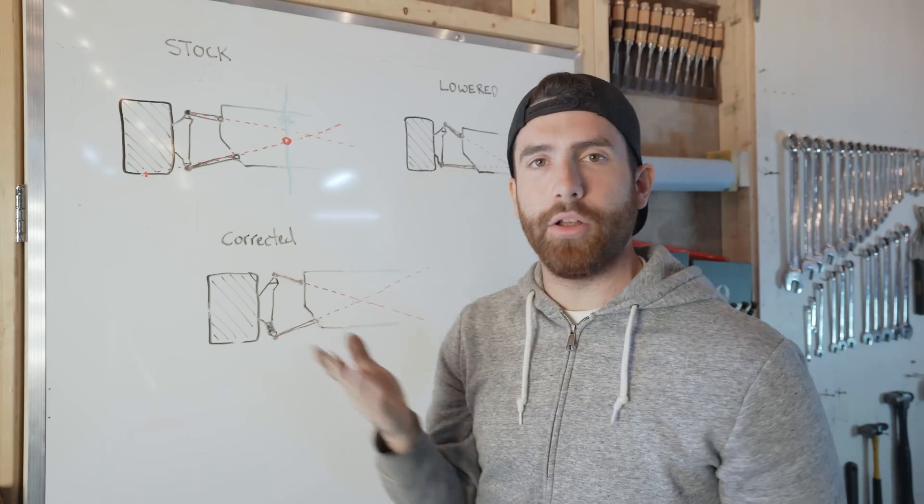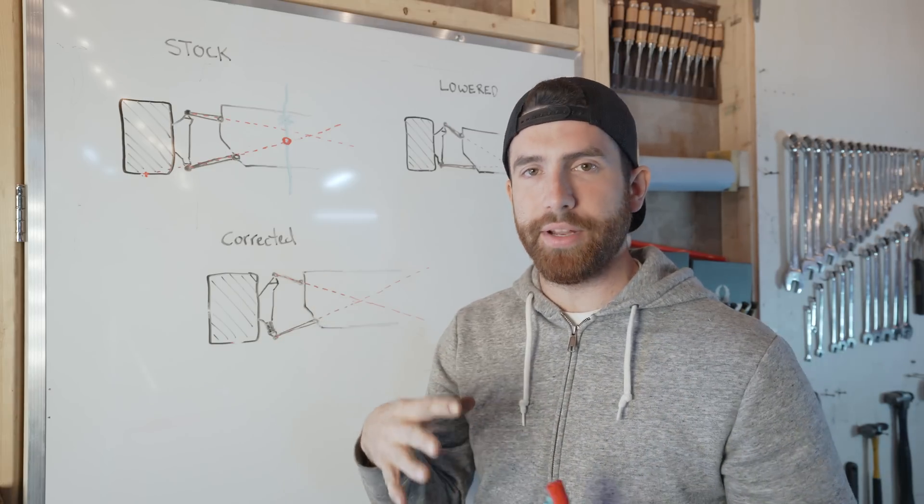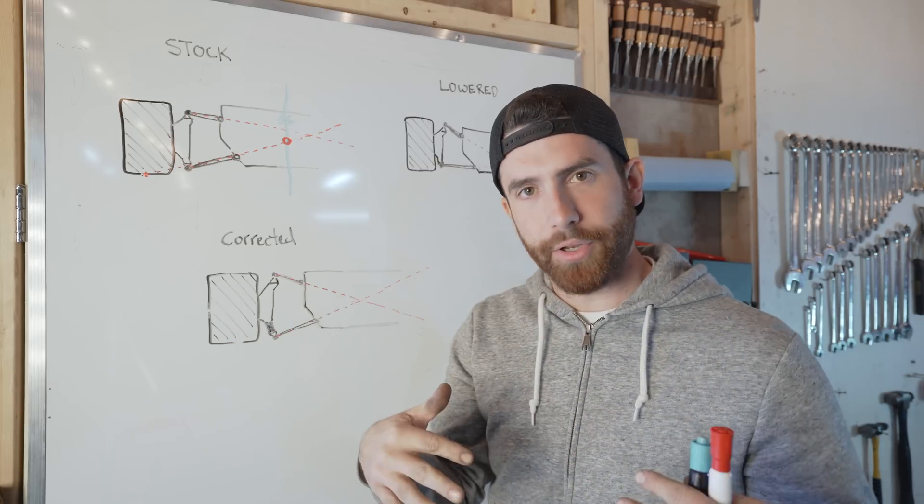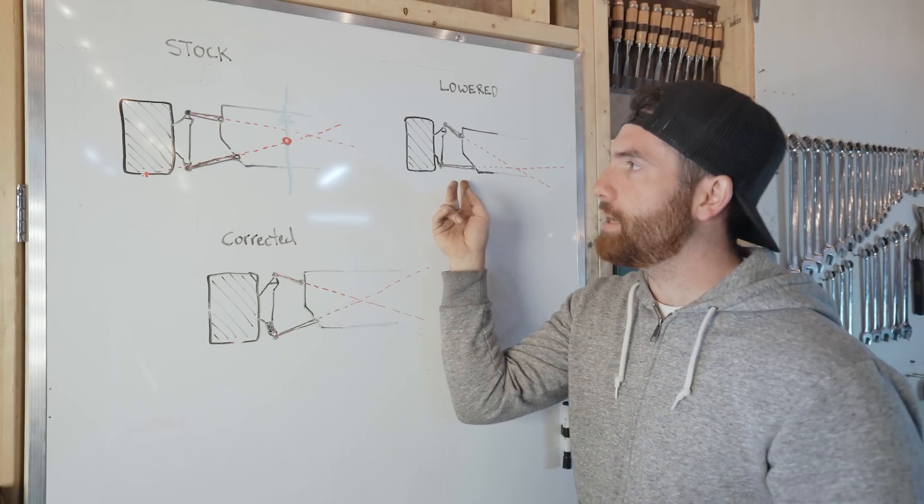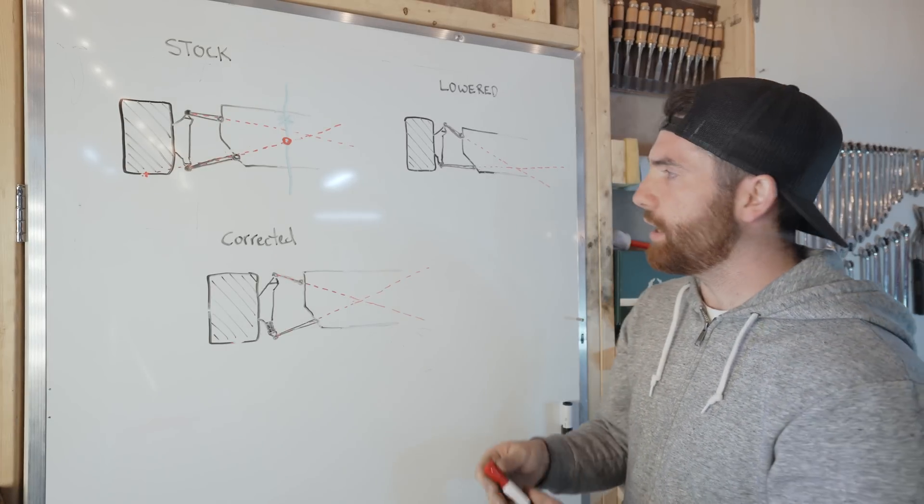This will give you the most amount of roll stiffness without having to increase spring rates or sway bars. Now the factory one here is fairly close to the center of gravity. Now we all know that we want better handling, so we want to lower our center of gravity so the mass isn't up top, it's nice and close to the ground.